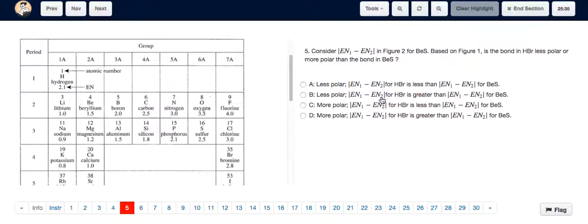So 0.7 is smaller than 1, so it's less polar. That means the bond in hydrogen bromide is less polar than the EN1-EN2 value for beryllium sulfur. The answer is A.